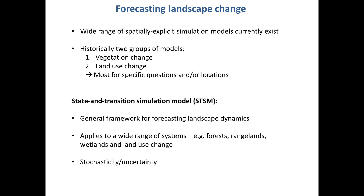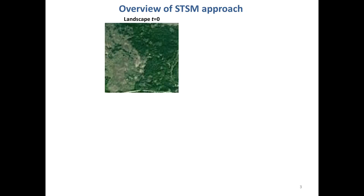This forms one of the major motivations for the state and transition simulation model approach, or STSM as we call it for short. STSMs have been purposely designed to be as general as possible, really trying to provide a general framework for modeling any kind of landscape change, and as a result they can and have been applied to a wide range of systems and questions at a number of different spatial scales. The other key feature is their stochasticity, which makes it conceptually straightforward to represent uncertainty in your projections of landscape change.